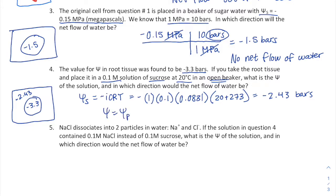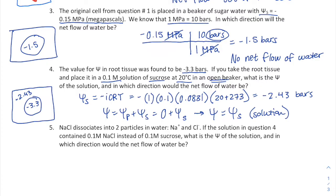Since we're in an open beaker, pressure potential is zero, so the water potential of the solution equals its solute potential: negative 2.43 bars. Water moves from high water potential to low — from negative 2.43 to negative 3.3 — so the net flow of water is into the cell.